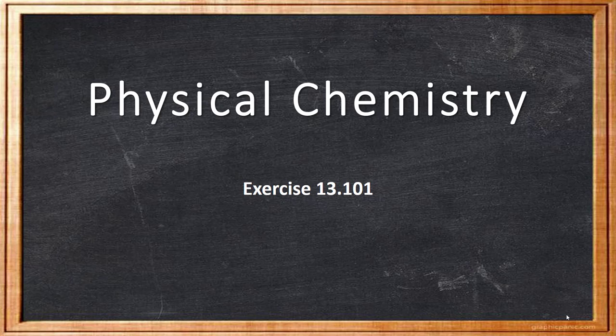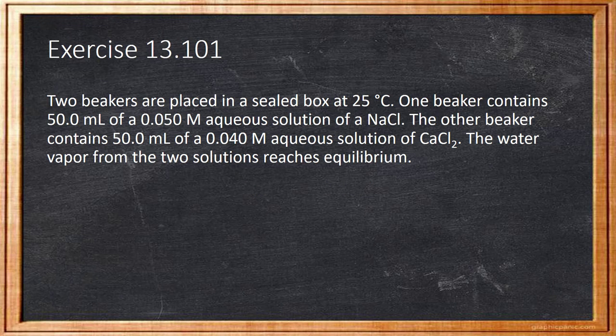In this video I will solve exercise 13.101 with you. Two beakers are placed in a sealed box at 25 degrees Celsius. One beaker contains 50 ml of a 0.05 molar aqueous solution of sodium chloride. The other beaker contains 50 ml of a 0.04 molar aqueous solution of calcium chloride. The water vapor from the two solutions reaches equilibrium.